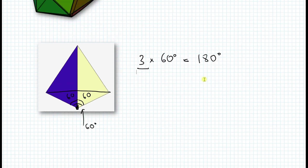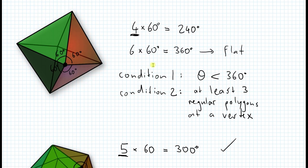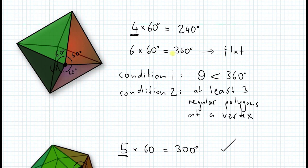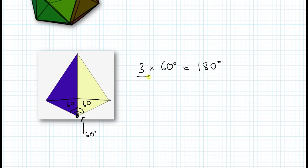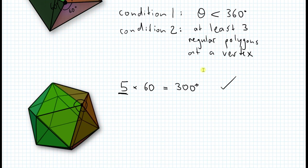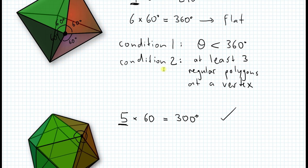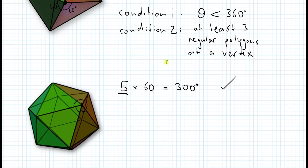So now we've covered all the cases for equilateral triangles: three triangles give the tetrahedron, four triangles give the octahedron, and five triangles give the icosahedron. You cannot put six triangles because then you have 360 degrees, and you cannot have fewer than three. Then you check through the list — the first polygon is an equilateral triangle, and the second polygon to check is a square.